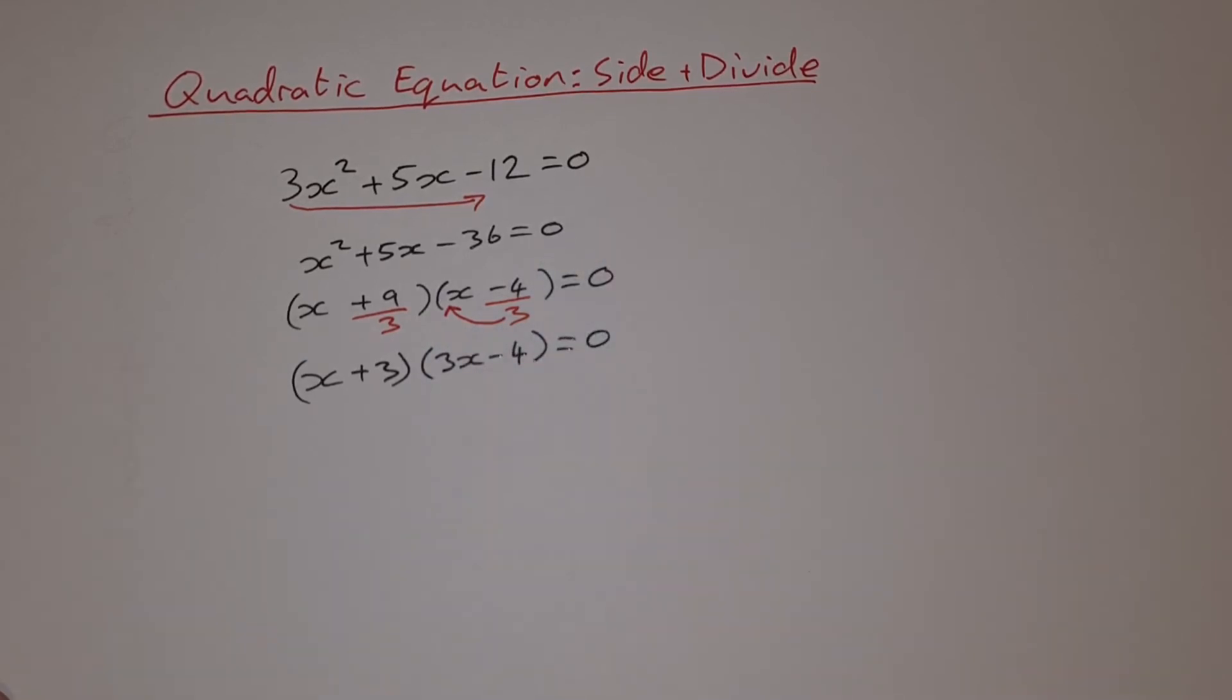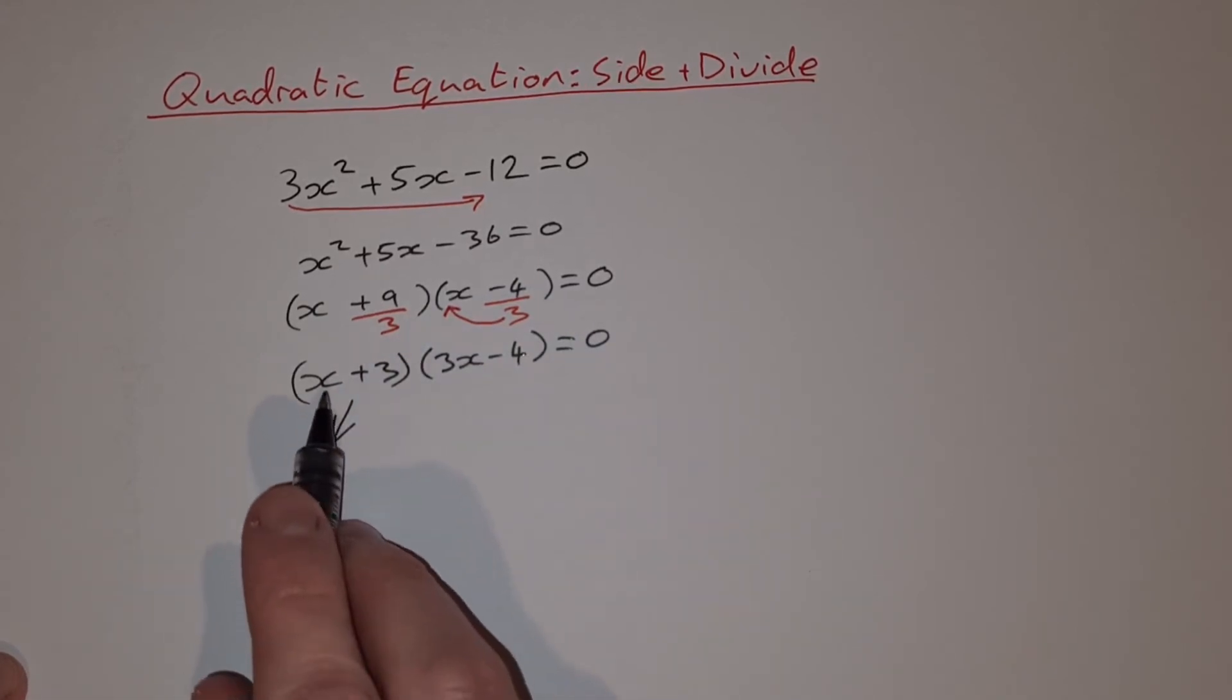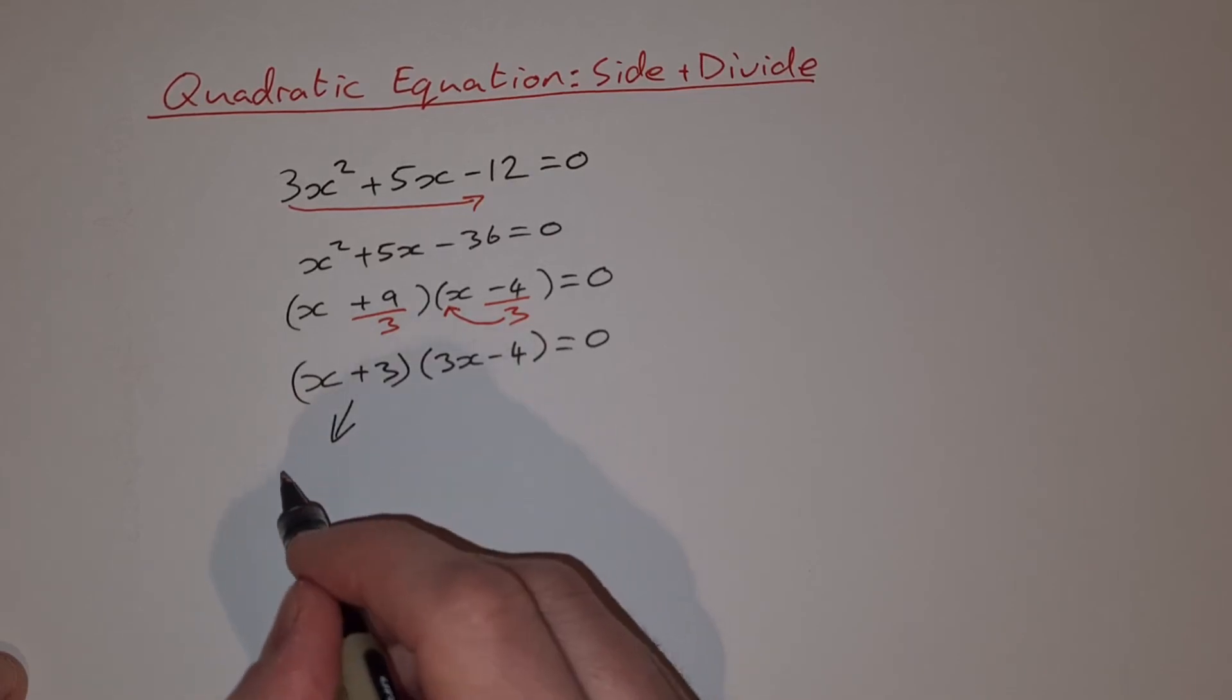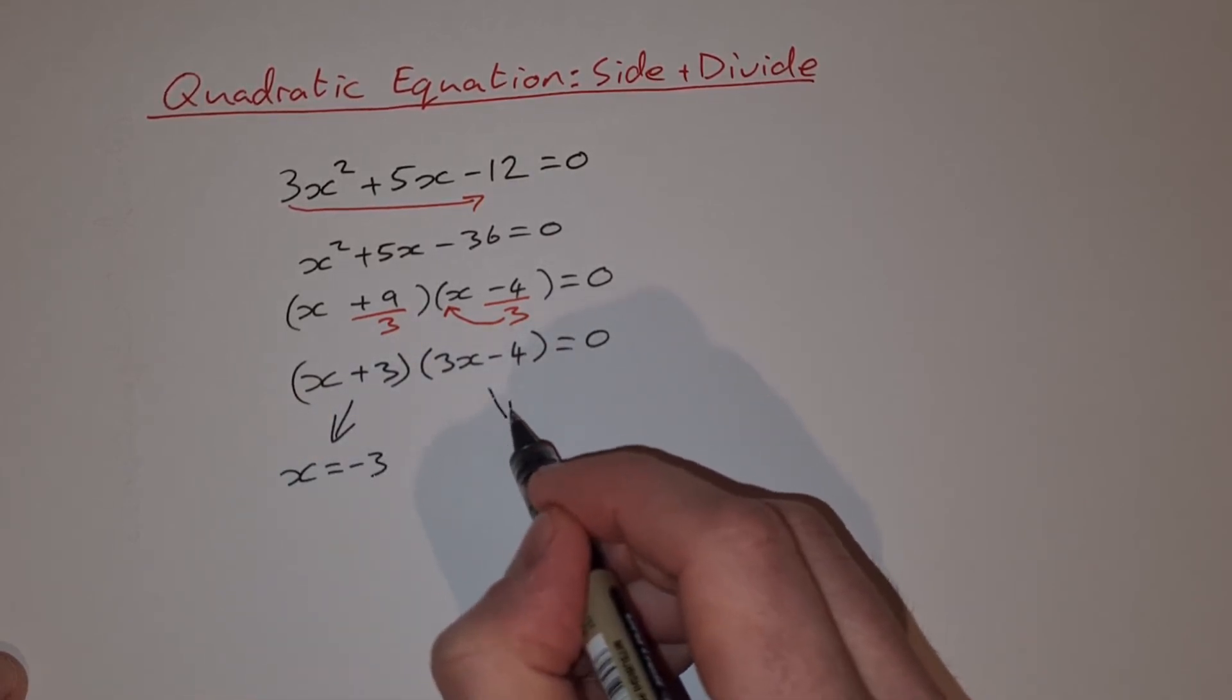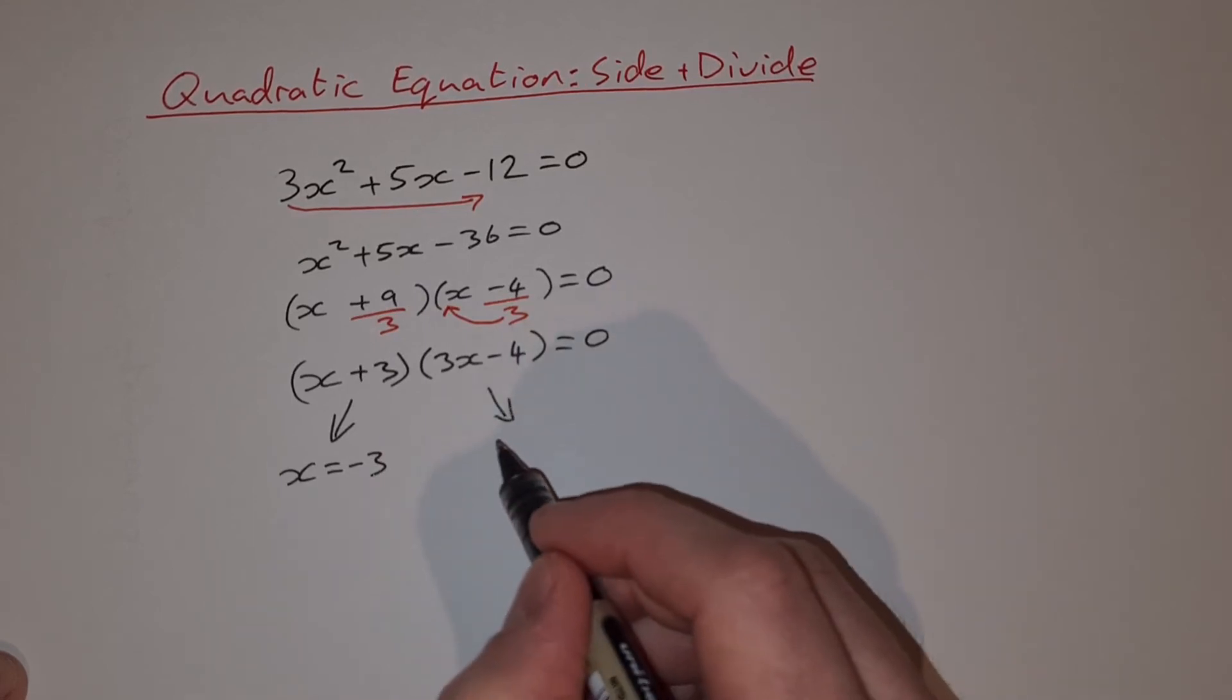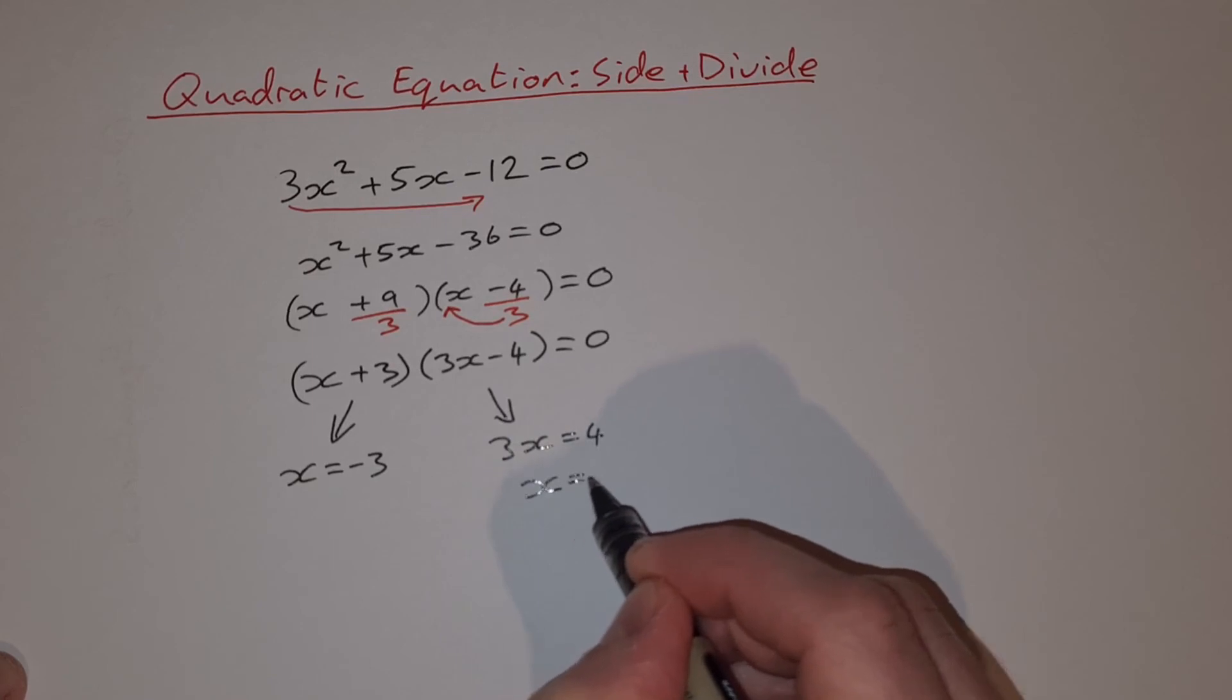So now I have it factorised. That was very easy. I can go and solve it. So let each factor equal 0. So for this one, x plus 3 equals 0, so x equals minus 3. For this one, 3x minus 4 equals 0, so 3x equals 4, and x equals 4 over 3.